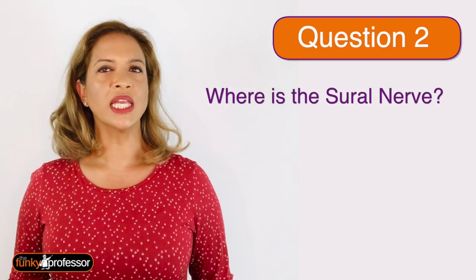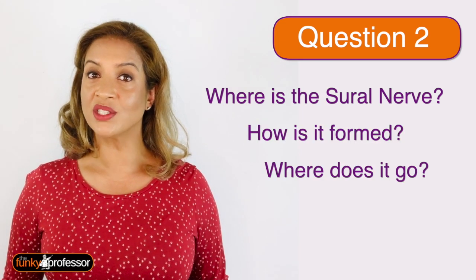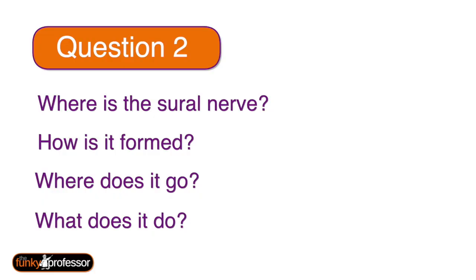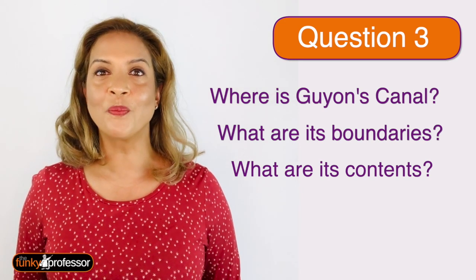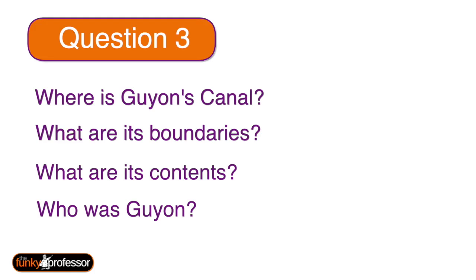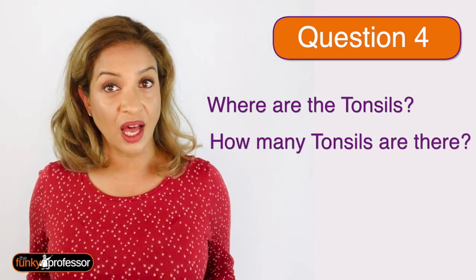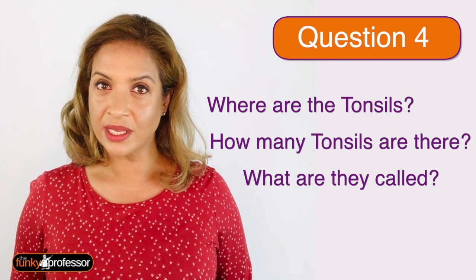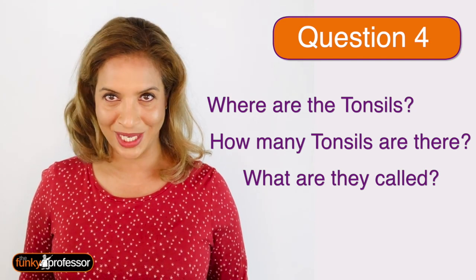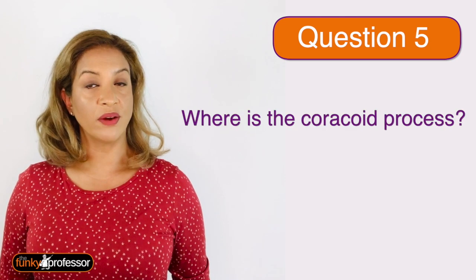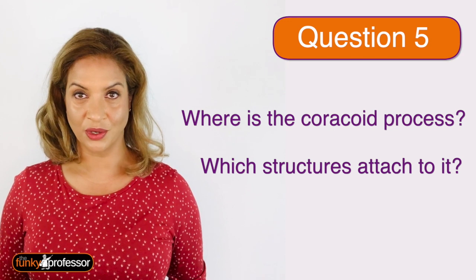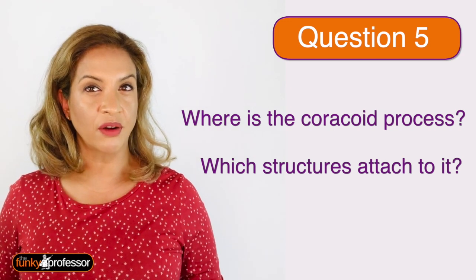Question two: where in the body is the sural nerve, how is it formed, where does it go, and what does it do? Question three: where is Guyon's canal, what are its boundaries, what are its contents, and for bonus points, who is it named after? Question four: where are the tonsils, how many tonsils are there, and what are they each called? The tonsils are collectively referred to as somebody's ring — who are they named after? Question five: where is the coracoid process found, and which structures attach to it? There are three muscles and four ligaments.